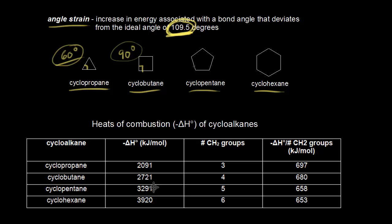For cyclopentane, this bond angle is 108 degrees, which is pretty close to 109.5 degrees. Closer than cyclohexane, whose bond angle is 120 degrees. So the theory was that cyclopentane is the most stable out of the cycloalkanes because its bond angle is closest to 109.5 degrees.